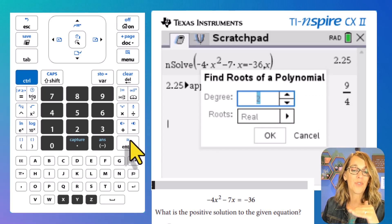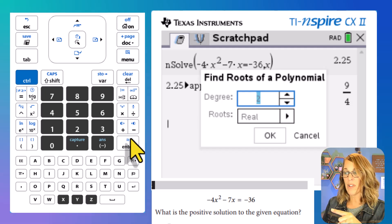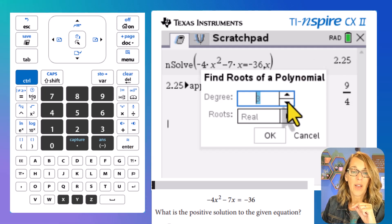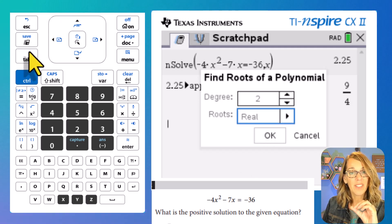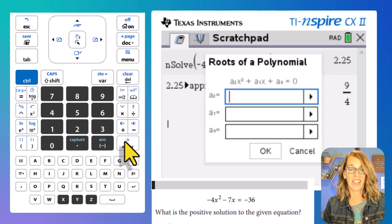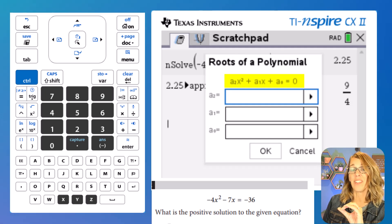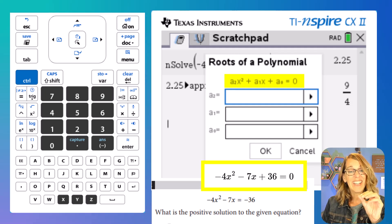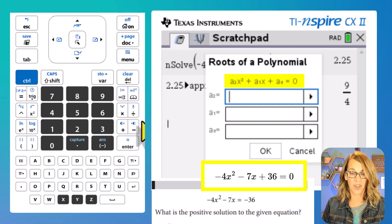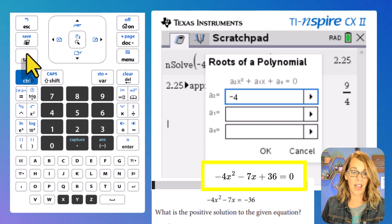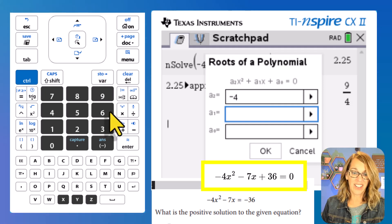And then it asks me for the degree of my polynomial. The degree of that polynomial is degree two. I could arrow up and down through those degree choices, but I do want degree two. I'm going to tab down to my real solutions and then go to OK and hit enter. Now it gives me this form of the equation, which is not what I have. So instead I need to move that negative 36 over as a positive 36. Now it's prompting me just for those coefficients. So a two is the coefficient on the squared term. That's going to be a negative four and then we'll hit tab. Now a one is the coefficient on the X term. So that's going to be a negative seven and then tab.